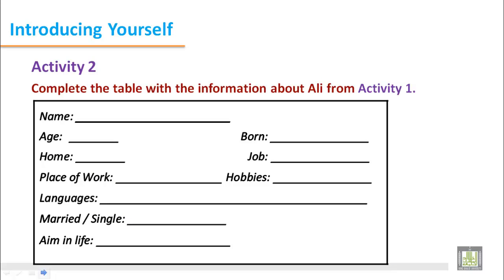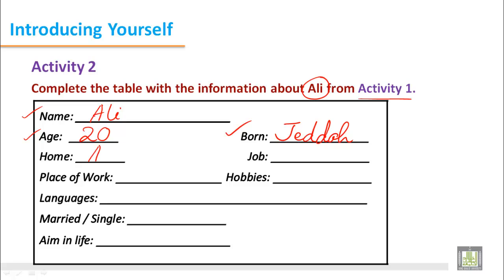Introducing Yourself, Activity 2. In this activity we are going to write information about Ali based on Activity 1. The first item is name — we can write Ali. Then age — he is 20 years old. Where was he born? The answer from the paragraph is Jiddah. Home — where does he live? He lives with his parents in Abha, so we write: his home is in Abha.